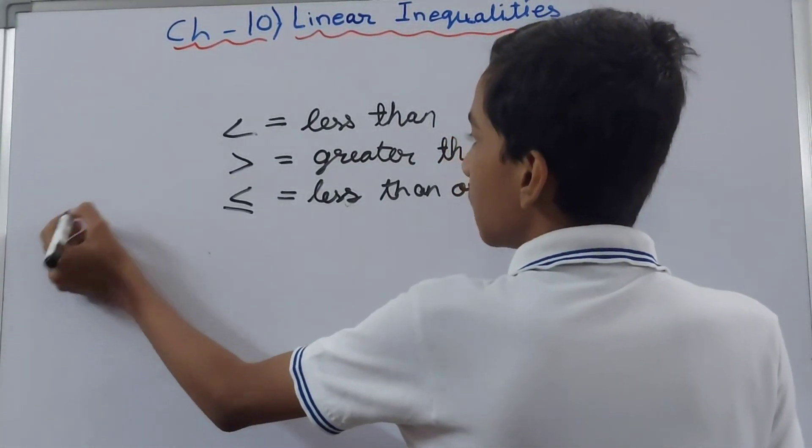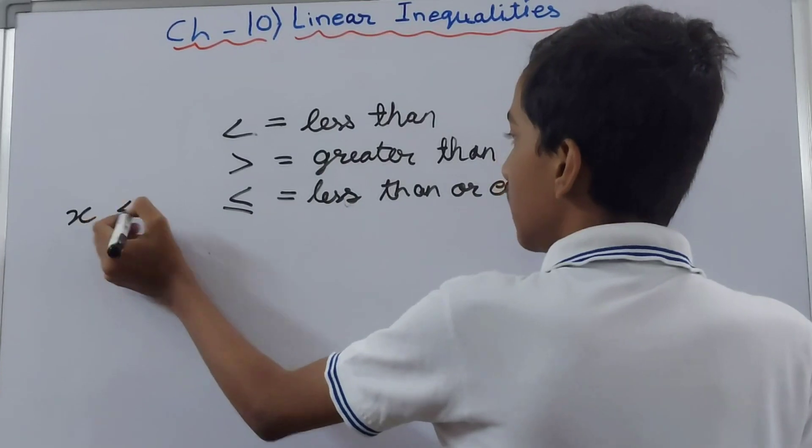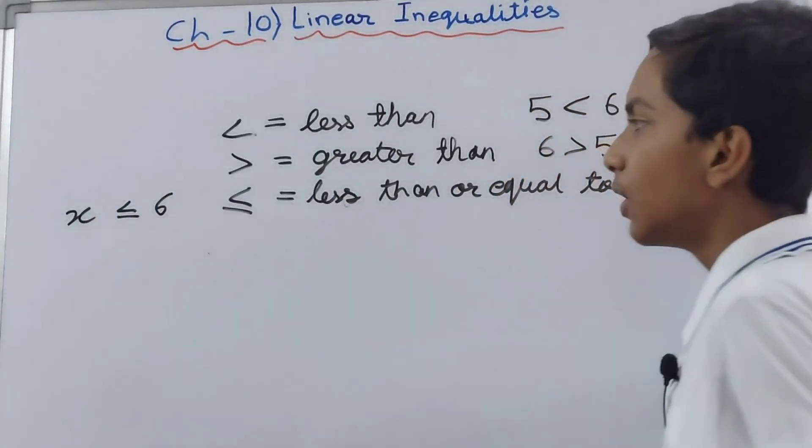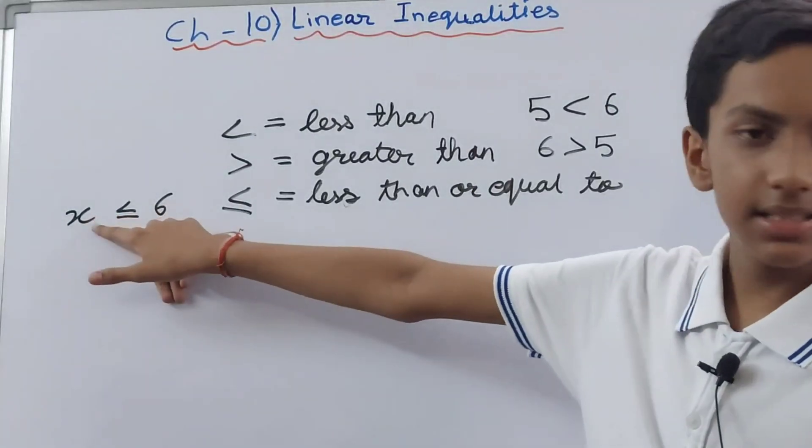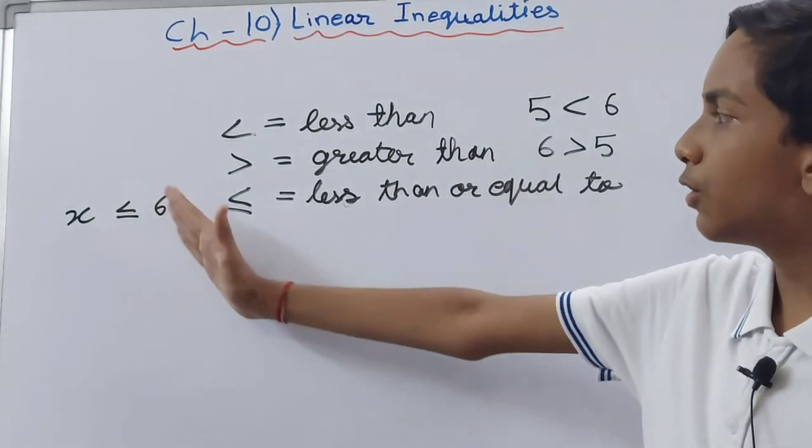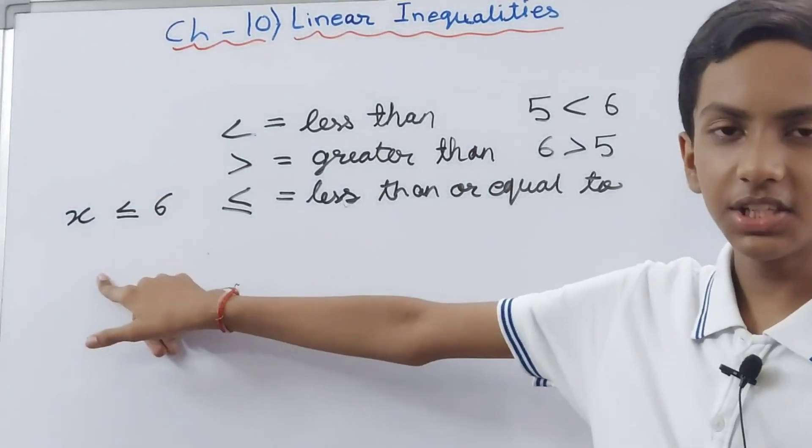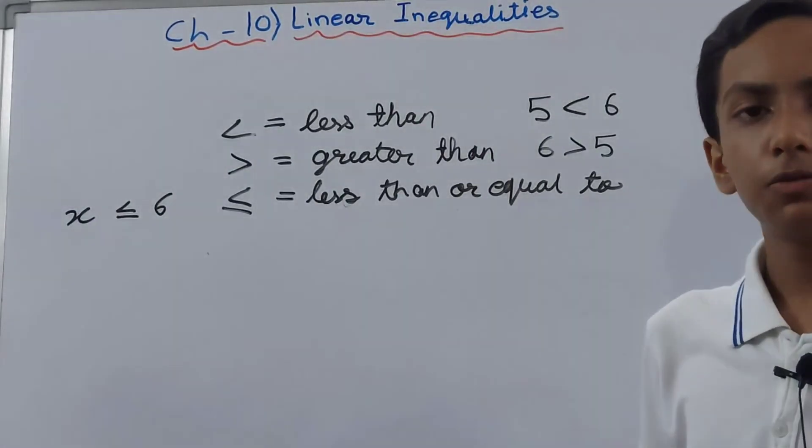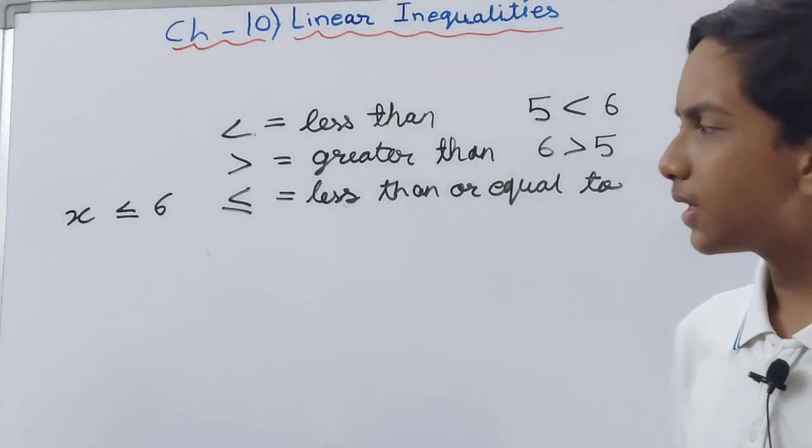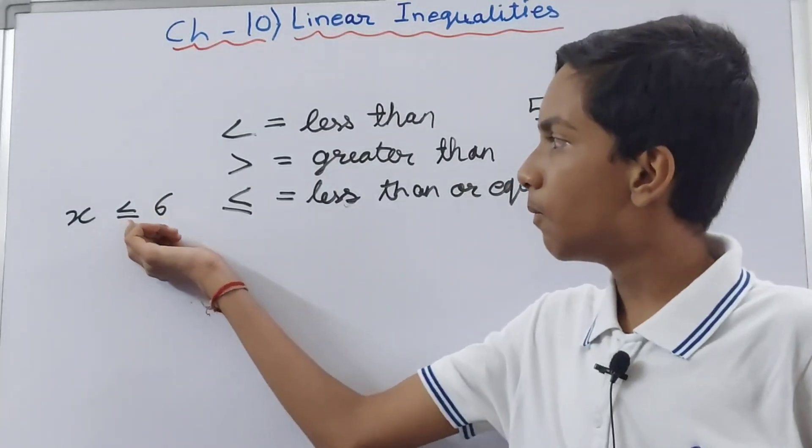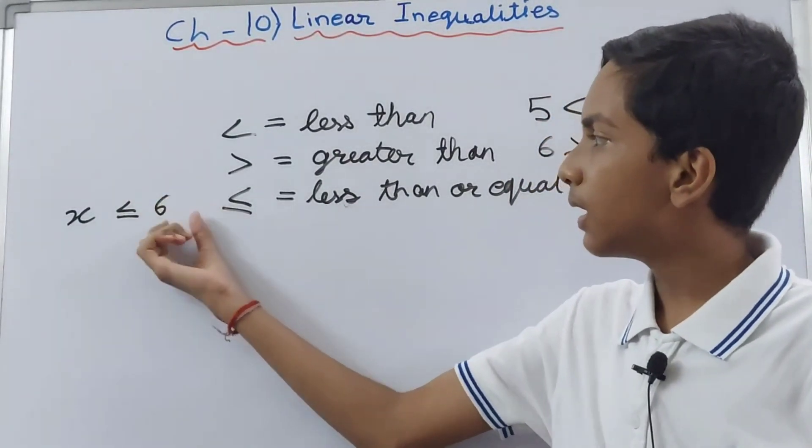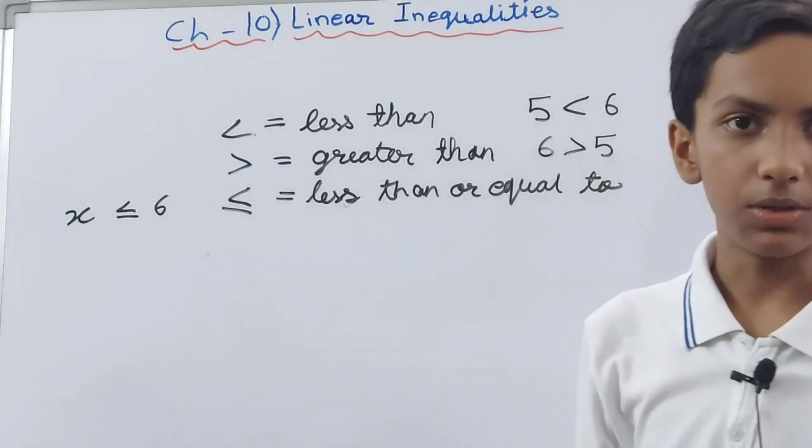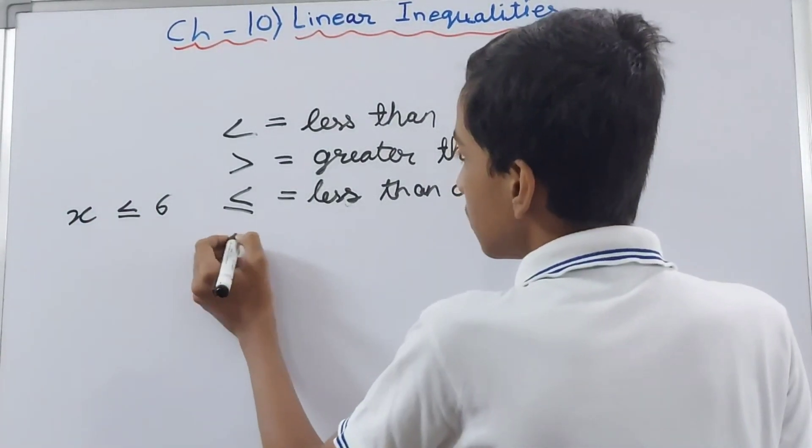We can say x is less than or equal to 6. Here, the value of x has to be less than 6, so it can be 1, 2, 3, 4, 5, or any negative number as well, or this bar tells us that the value of x is equal to 6.